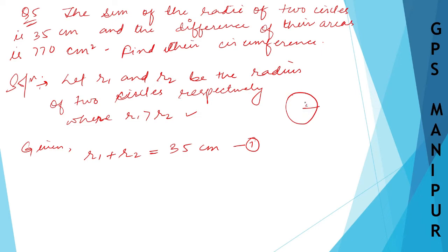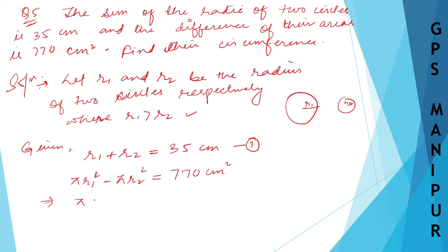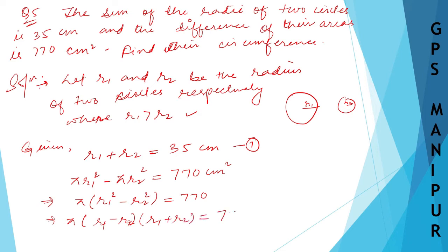The difference of the areas means pi r1 squared minus pi r2 squared is equal to 770 centimeters squared. Taking pi as common: pi times (r1 squared minus r2 squared) equals 770. Using the identity a squared minus b squared equals (a minus b)(a plus b), this becomes pi times (r1 minus r2) times (r1 plus r2) equals 770.